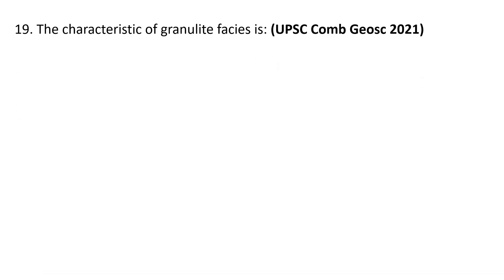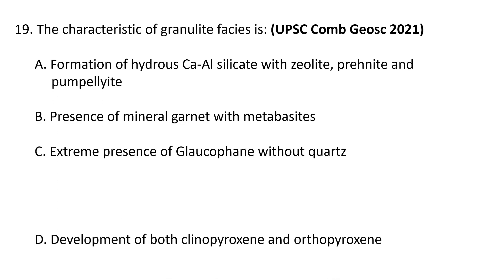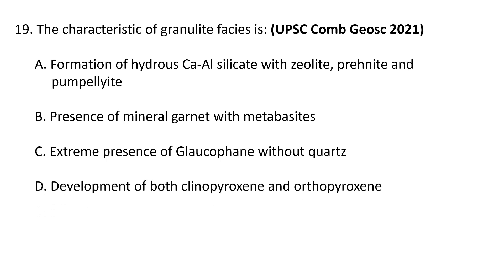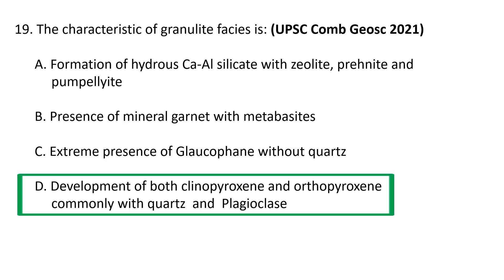Question 19: The characteristic of granulite facies is: (a) formation of hydrous calcium-aluminium silicate with zeolite, prehnitie, and pumpellyite, (b) presence of mineral garnet with metabasites, (c) extreme presence of glaucophane without quartz, or (d) development of both clinopyroxene and orthopyroxene. The correct option is D. Granulite facies are characterized by granoblastic texture and a large amount of K-feldspar or K-pyroxene with variable proportions of garnets, occurring at very high pressures and temperatures. The characteristic feature is development of both clinopyroxene and orthopyroxene, commonly with K-feldspar plagioclase.